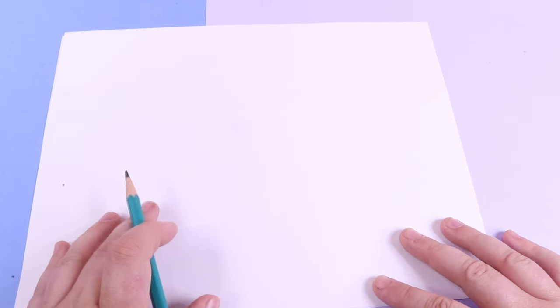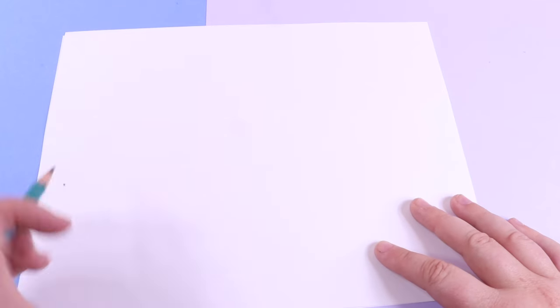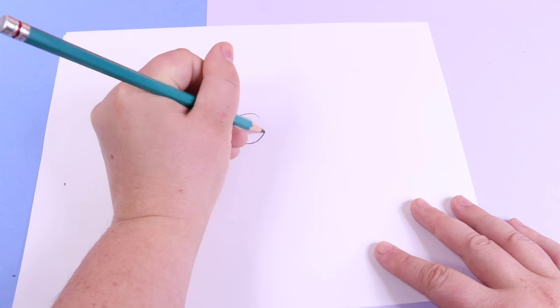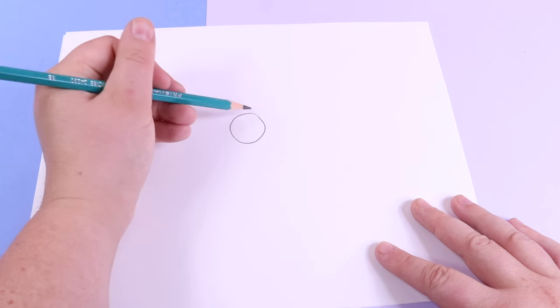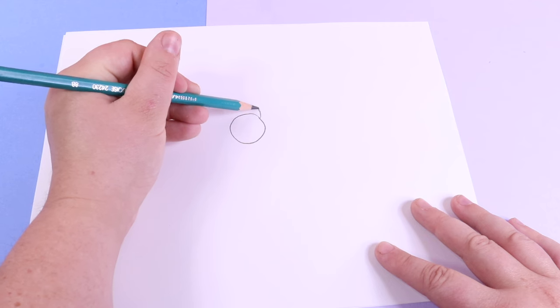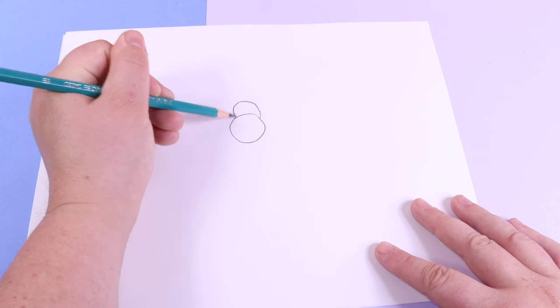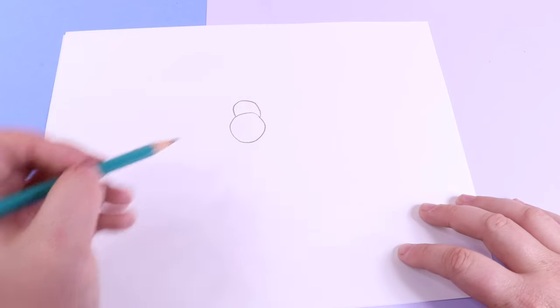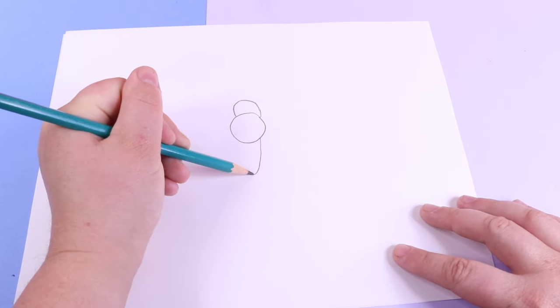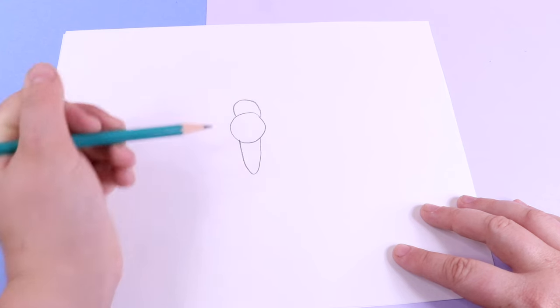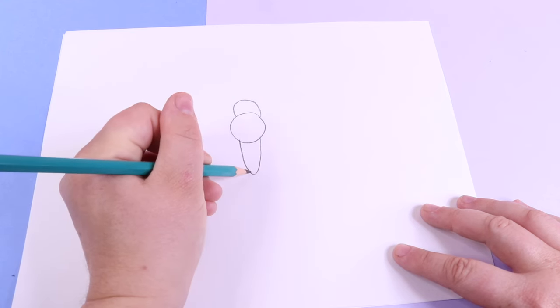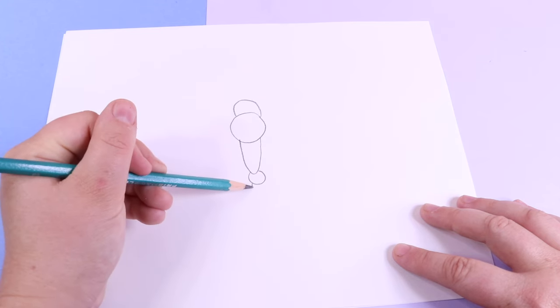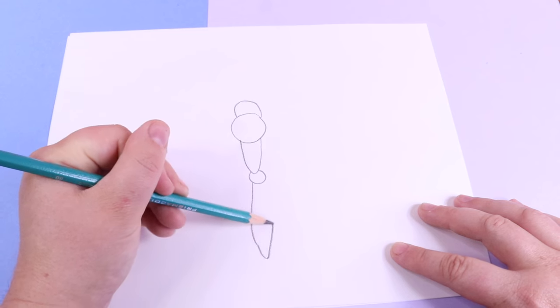We're going to start with step one by drawing the body. A tiny circle in the middle of your page. From that, we're attaching a half circle as the head and a long body. Then we're adding a little tiny circle to the body and what looks like a long tail to the back.